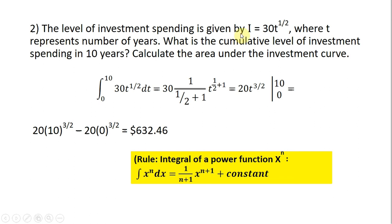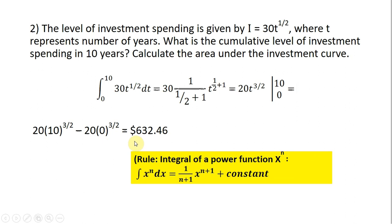The level of investment spending is given by investment equals 30T raised to the one-half power, where T represents the number of years. What is the cumulative level of investment spending in 10 years? We take the definite integral from 0 to 10 of 30 times the square root of T dt. Taking the antiderivative using the power function rule and evaluating at 10 and subtracting the result at 0, the cumulative level of investment spending in 10 years is $632.46.